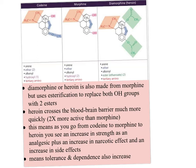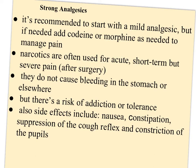As you go from codeine to morphine to heroin, you see an increase in the strength of the analgesic, but also an increase in the narcotic effect and side effects — meaning tolerance and dependence also increase. It's recommended to start with mild analgesics like aspirin or Advil, and add codeine if needed. After day surgery you might get Tylenol 3, which is Tylenol with a little codeine — a combination of mild and strong analgesics. Morphine is usually administered in hospital for acute, short-term but severe pain after major surgery. One advantage of strong analgesics is they don't cause bleeding in the stomach, but there's always a high risk of addiction and tolerance.